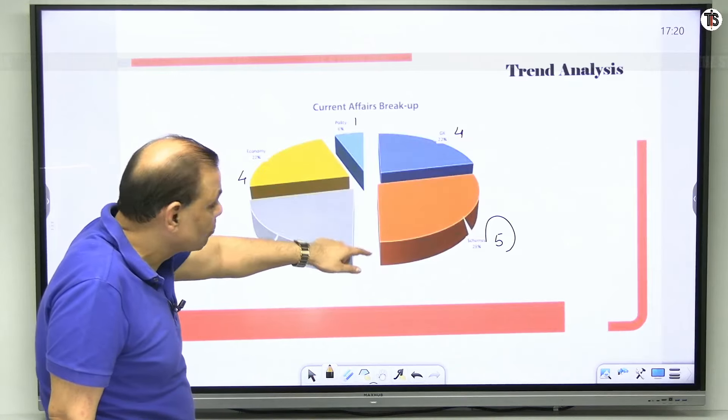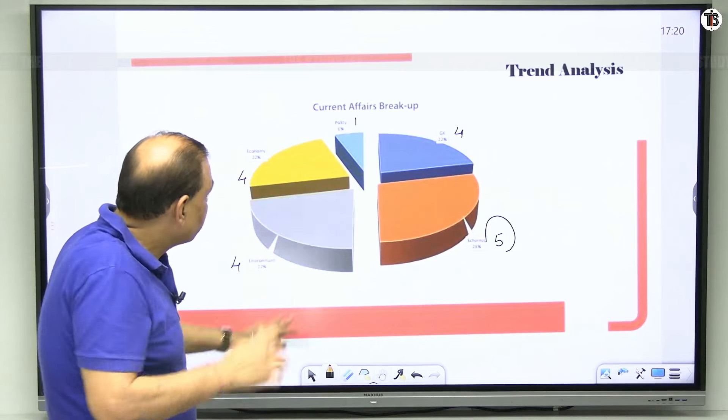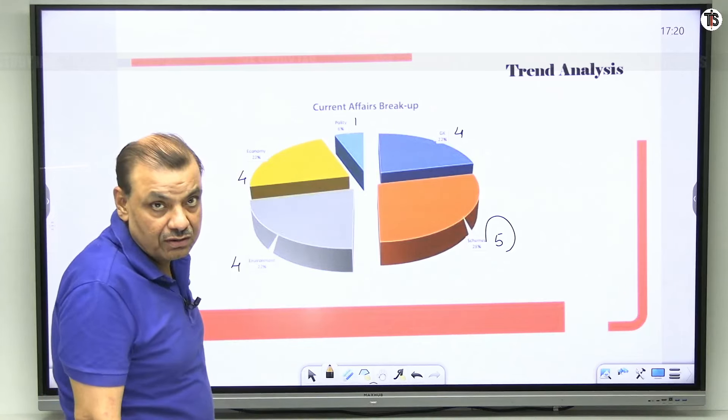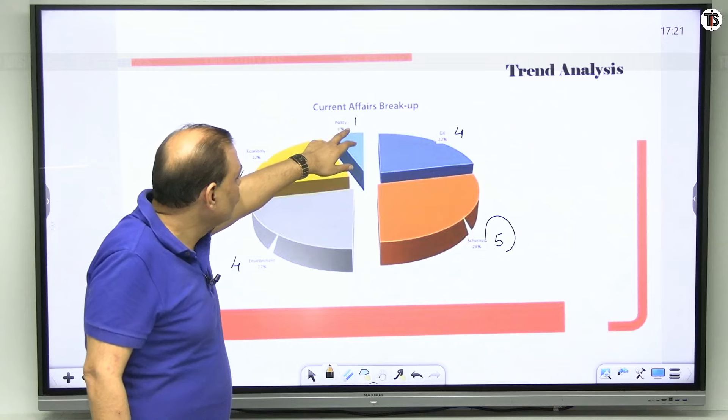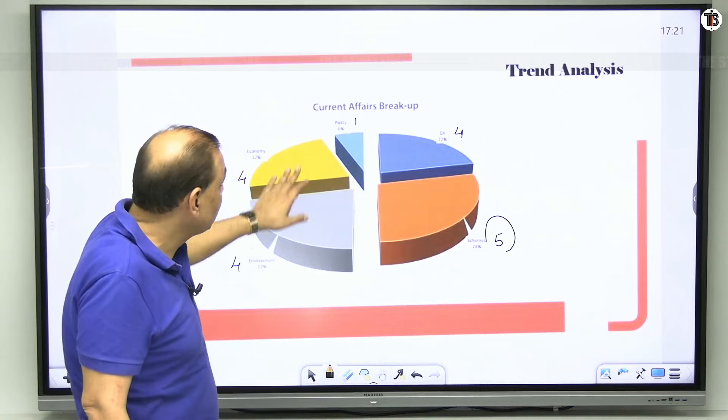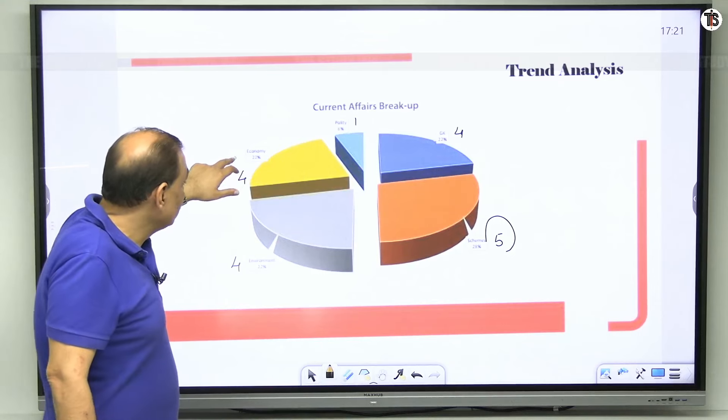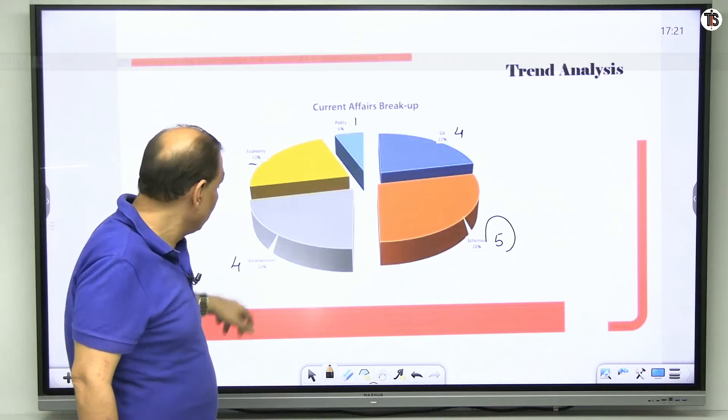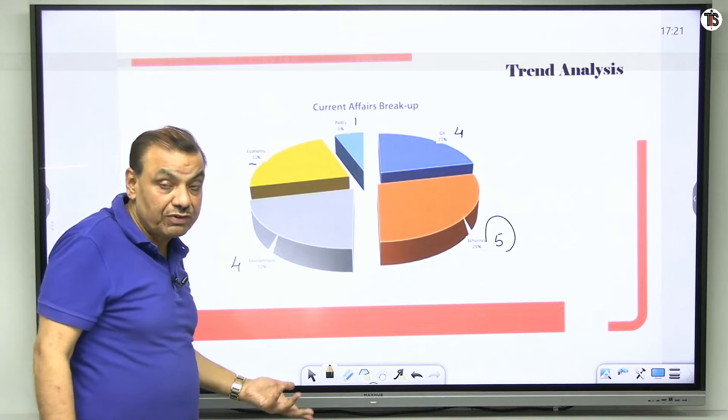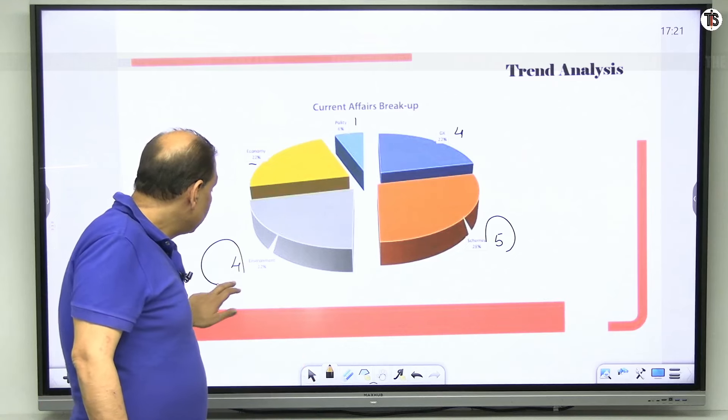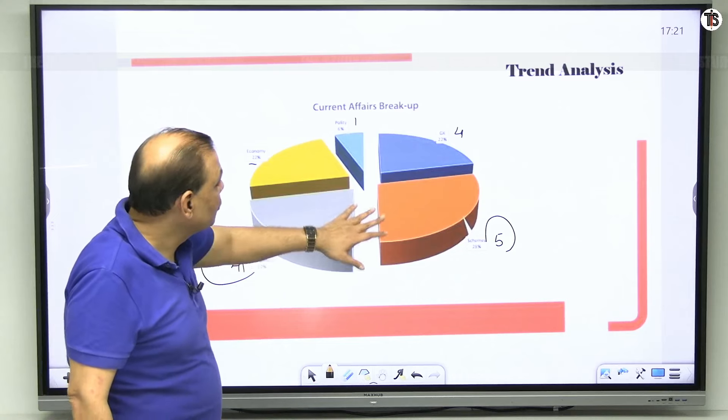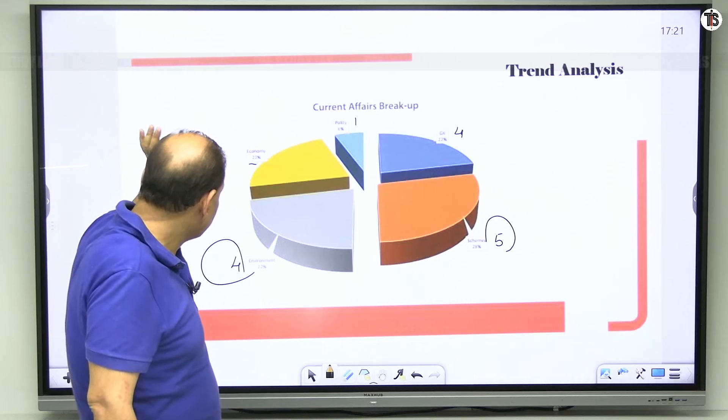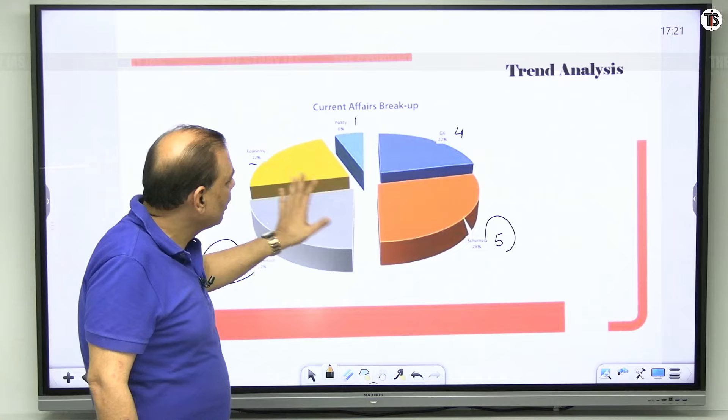So in 18 questions, five questions on the government scheme, four questions that is in GK general knowledge and one question from polity and economy 22 percent. Now the total number of questions in current side economy is 4 questions, but percentage is 22 and environment, current side of environment is also 4 questions and that is also 22 percent. So these are 5 questions, 4, 1, and economy. You have to see 4 questions in environment, this way you can see total break up 5, 4, 1, 4 and 4.